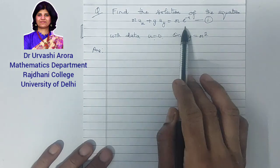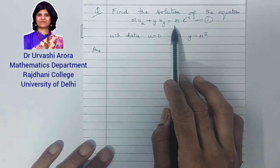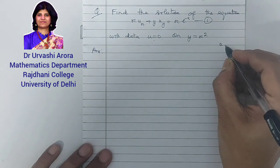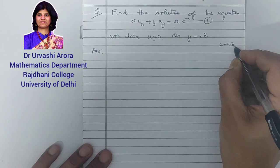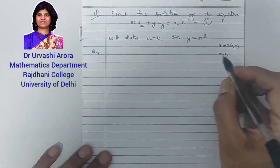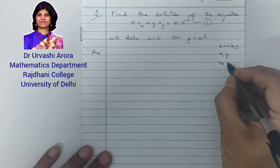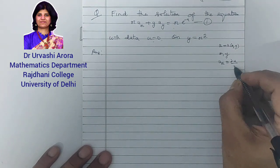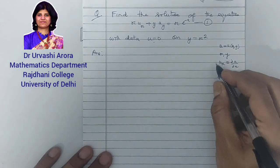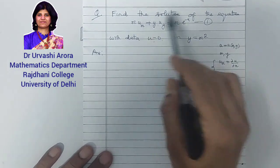This equation, which I have marked as 1, is a quasi-linear partial differential equation of first order. Here, u is a dependent variable dependent on x and y, meaning u is a function of x and y. x and y are two independent variables, and this is a first order PDE because u_x and u_y — the first order partial derivatives of u with respect to x and y — are occurring in the equation.